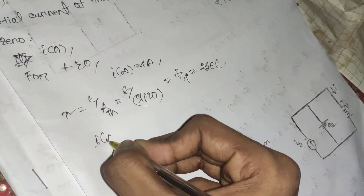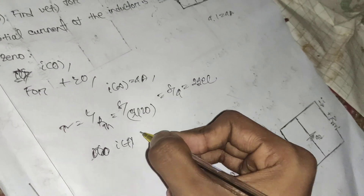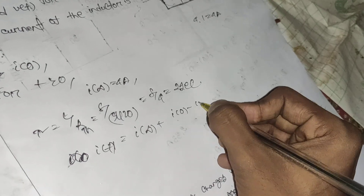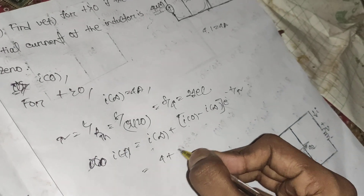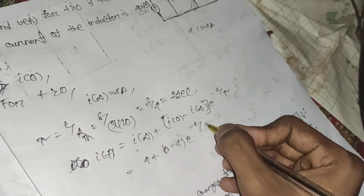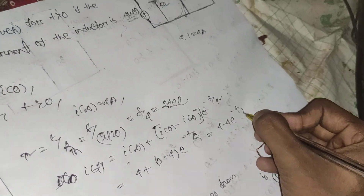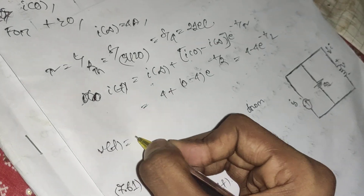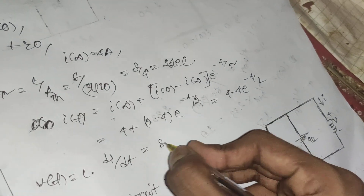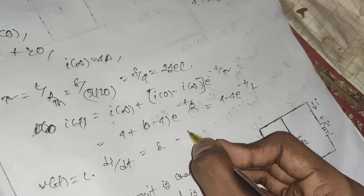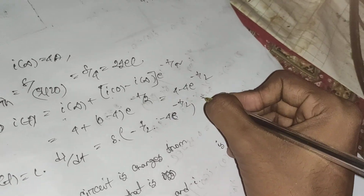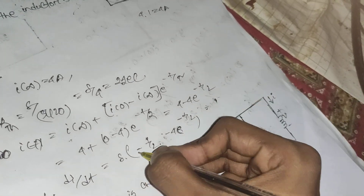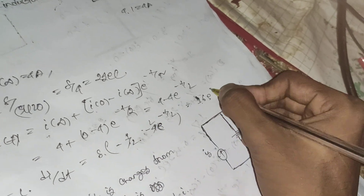Writing the current equation: i(t) = i(∞) + [i(0) − i(∞)]·e^(−t/τ) = 4 + (0 − 4)·e^(−t/2) = 4 − 4e^(−t/2). Then v(t) = L·di/dt = 8 × (−½)(−4)e^(−t/2) = 16e^(−t/2) volts. This is the answer for problem 7.60.